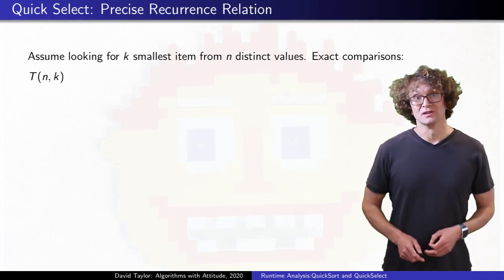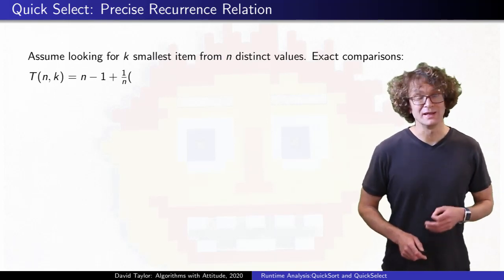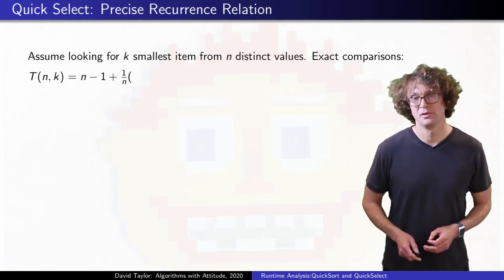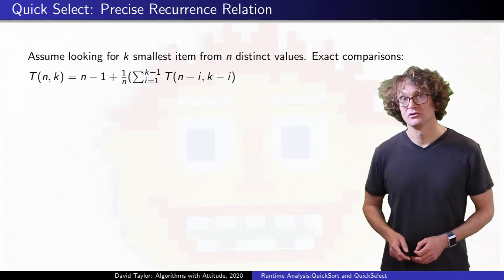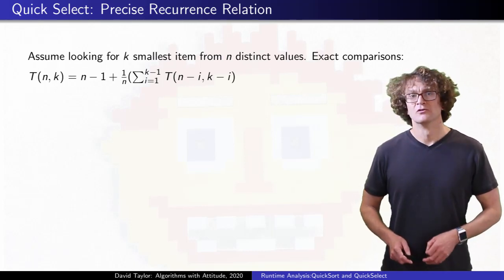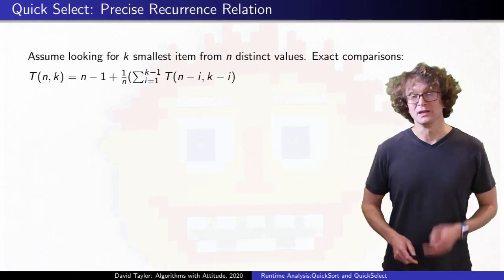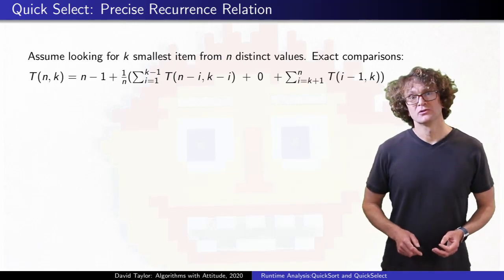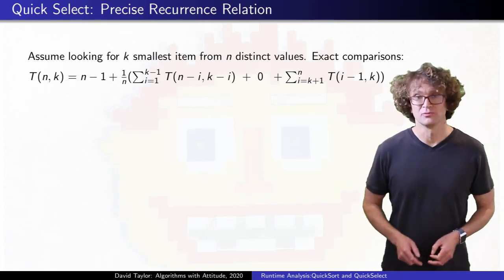So, it takes linear time to partition, and for any i from 1 to n, there is an equal probability of picking the i-th smallest item from the array as our pivot. If i is less than k, we need to recursively search all elements with rank larger than i, for the k minus i-th smallest element. If i equals k, we are done, and if i is greater than k, we need to search all elements with rank less than i for the kth smallest.